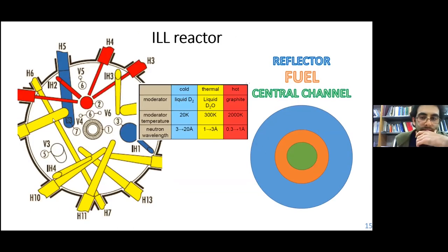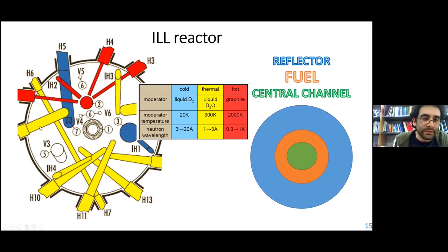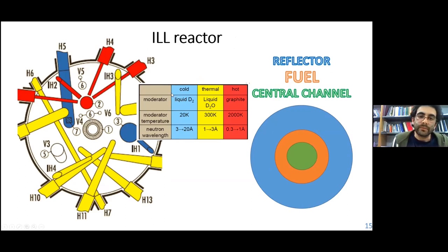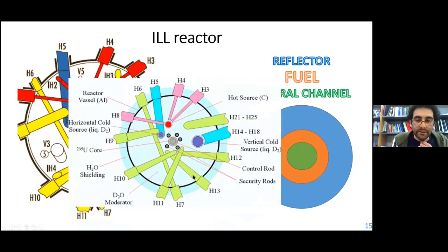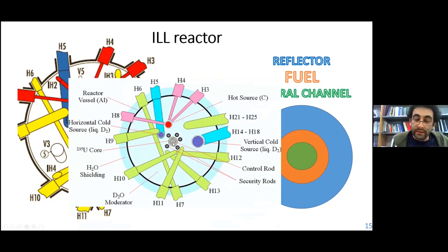This is the ILL reactor. We have the reflector, then the fuel where the uranium is, and then the central channel. In this good representation, we have the central channel, the fuel, and the reflector where the heavy water is. Actually, the heavy water is also in the central channel. We have different kinds of moderation to achieve different ranges of wavelengths of the neutrons — cold, thermal, and hot — with different kinds of moderation material. The control rods, which we use to control the k value, are inside the central channel. We also have five security rods.